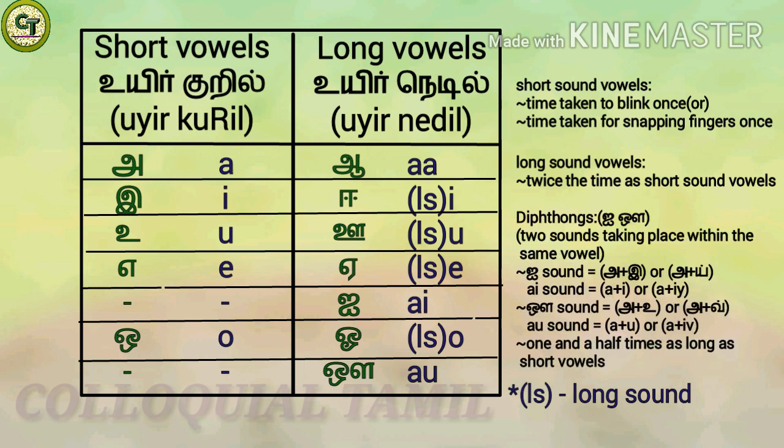Among the seven long sound vowels, the fifth vowel 'i' and the last vowel 'au' are diphthongs — that is, two sounds taking place within the same vowel. For vowel 'i', it starts with the sound of short vowel 'a' and ends with the sound of short vowel 'u', similar to the combination of short vowel 'a' and consonant 'e'. For vowel 'au', it starts with the sound of short vowel 'a' and ends with the sound of short vowel 'u', similar to the combination of short vowel 'a' and consonant 'iv'.